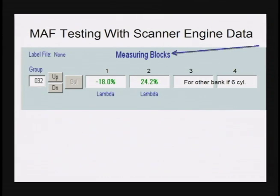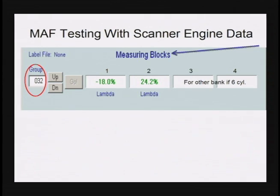Volkswagen does not call their PIDs "PIDs" — they call them measuring blocks. It is where we measure the different pieces of information. In this case we're going to look at what we traditionally would call fuel trims. The measuring block set we want to go to is in what we call group 32. If you have a Snap-on, a Vagcom, or Volkswagen software for other tools, it'll allow you to go to measuring blocks group 32.